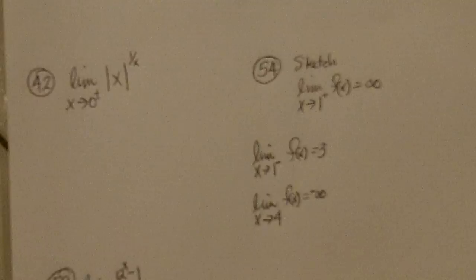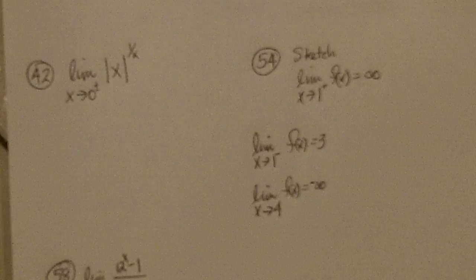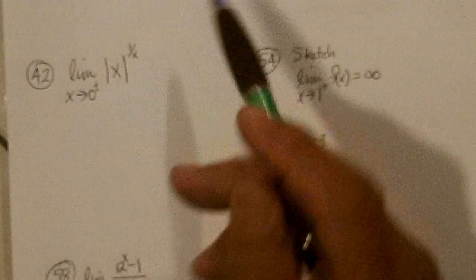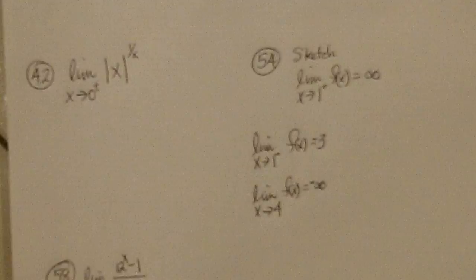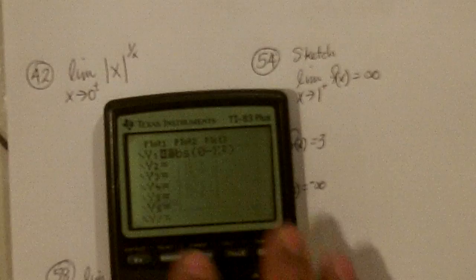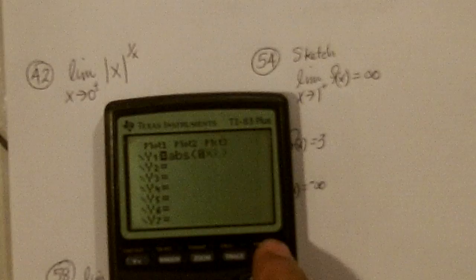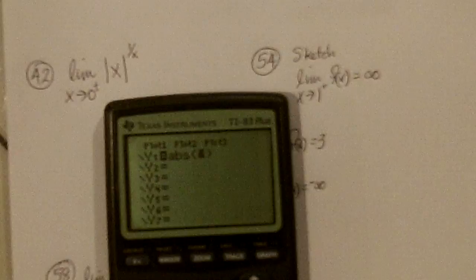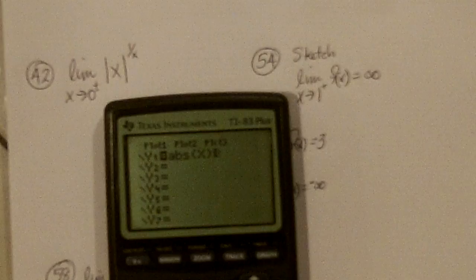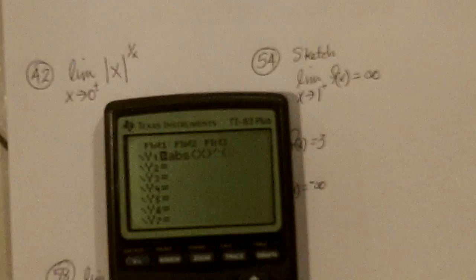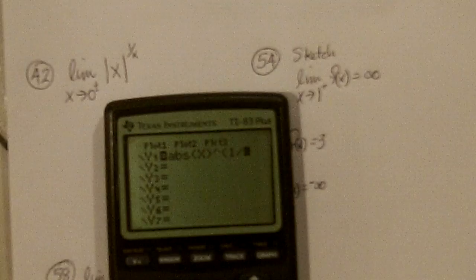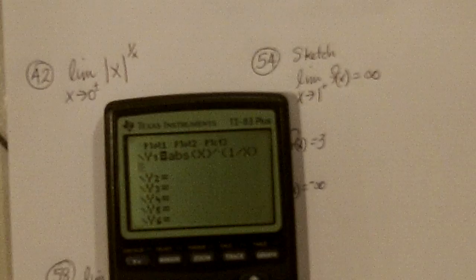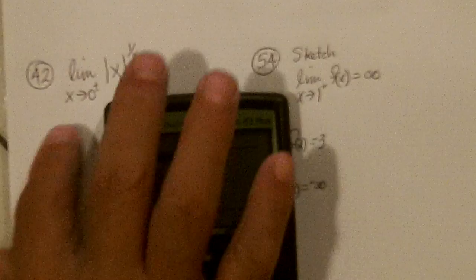Okay, so now let's go to 42. Now 42, we're supposed to investigate the limit of the absolute value of x to 1 over x as x approaches 0 for both from the positive and negative side, so I'll type that into here, absolute value of x to the parenthesis 1 divided by x, close parenthesis,